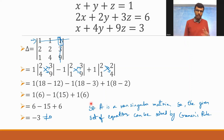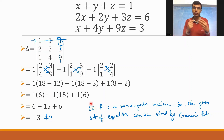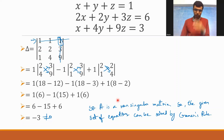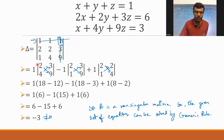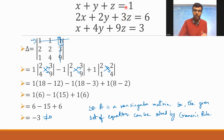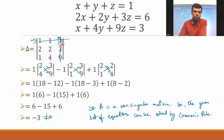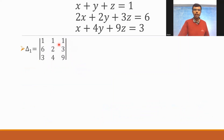This was the first determinant explained in detail. After this, I need to find delta 1, delta 2, and delta 3. To get delta 1, replace the first column of delta with the elements of D — basically 1, 6, 3. So instead of 1, 2, 1 in the first column, I have 1, 6, 3. The second and third columns remain the same: 1, 1, 2, 3 and 4, 9.